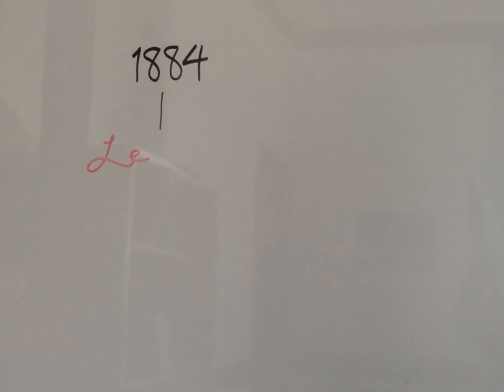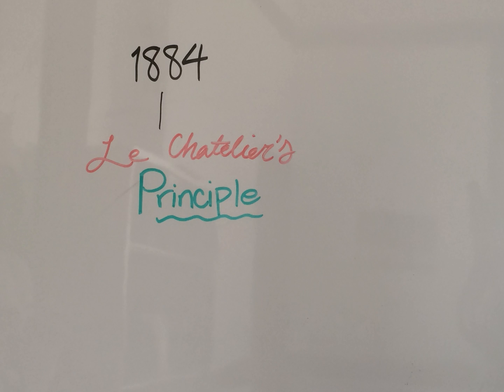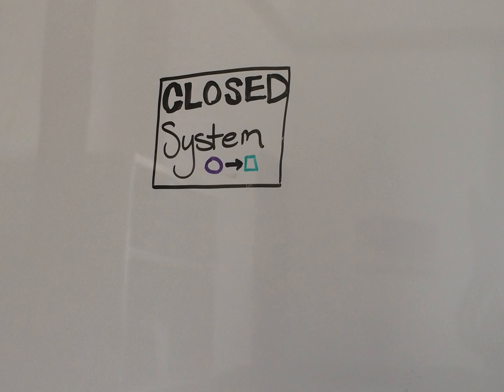In 1884, Le Chatelier's principle was proposed. Le Chatelier's principle is what happens to a system when it is forced out of equilibrium.